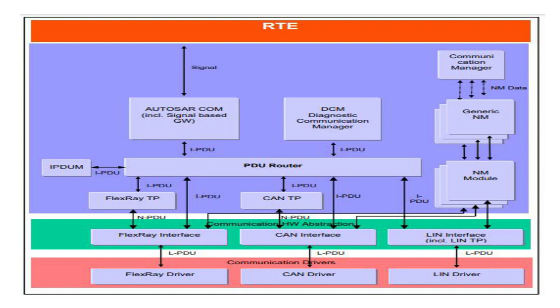To summarize, the COM module converts signals into PDUs, controls start and stop, performs filtering to determine when to transmit and when not to transmit, and handles conversion from one protocol to another so that messages from one cluster can be transmitted to another cluster. Most of the time in AUTOSAR configuration is spent on the COM module, as it is really required for effective communication to happen.